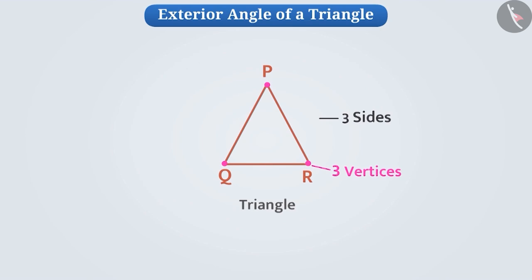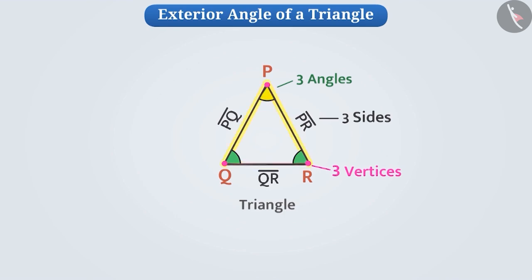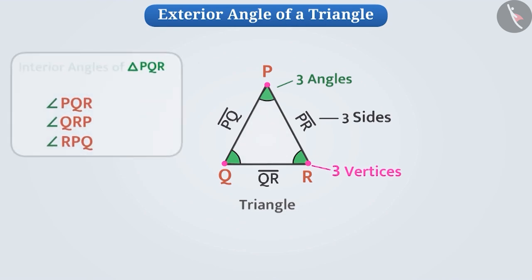It has three sides, just like triangle PQR has sides PQ, QR, and PR. And it has three angles, like triangle PQR has angles: angle PQR, angle QRP, and angle RPQ. As you can see, all these angles are interior angles of triangle PQR.